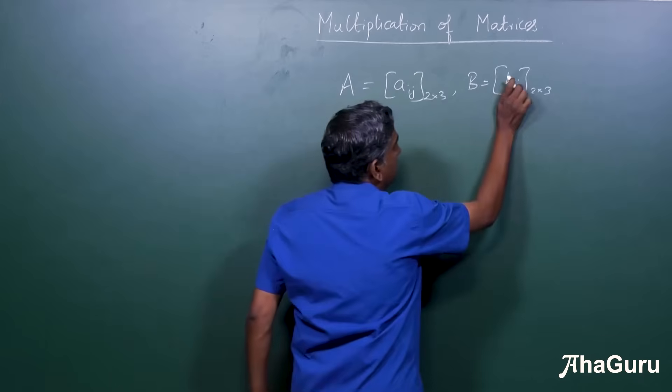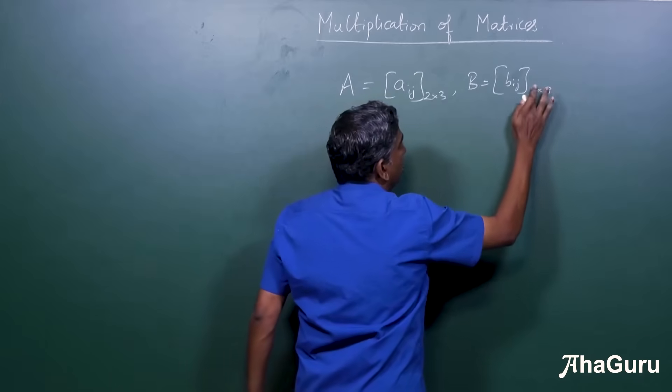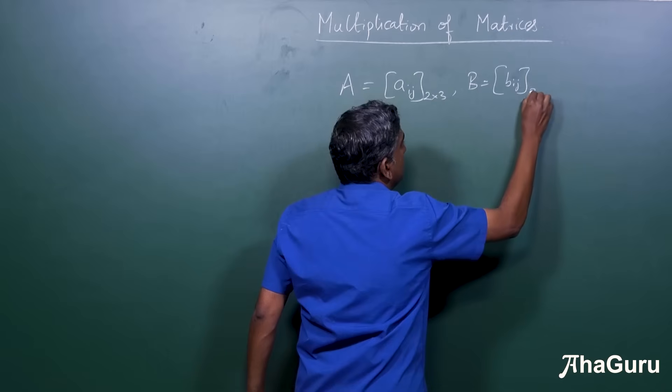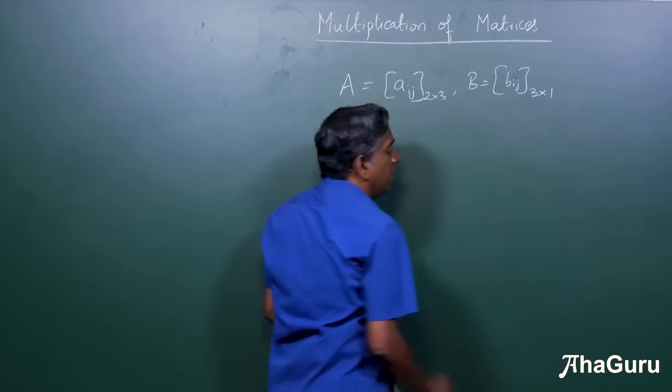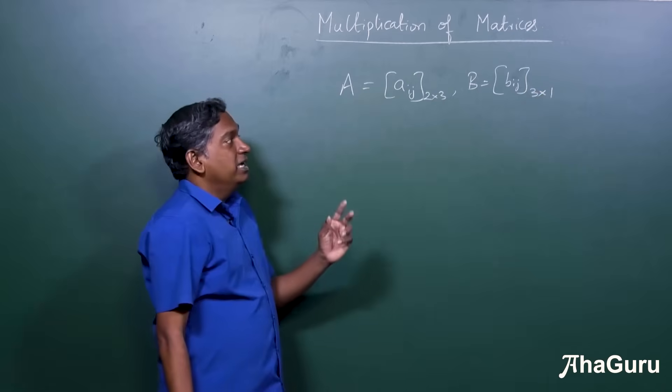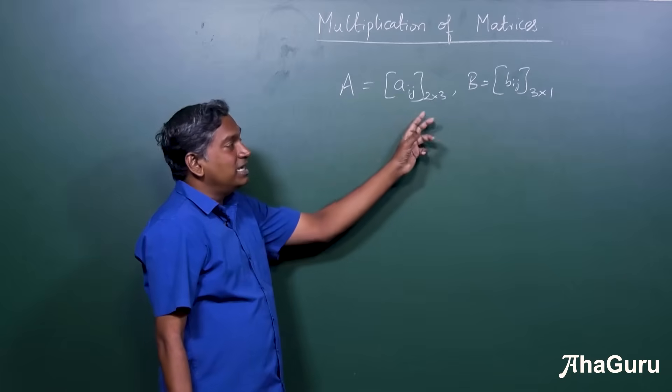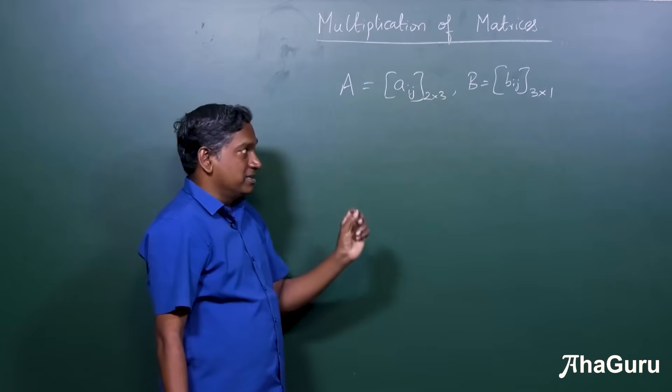Let's say that B is a matrix, not 2 by 3, but let's say 3 by 1. Now, let's understand how we can multiply the matrices.